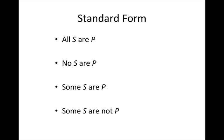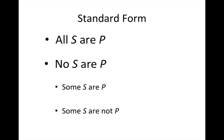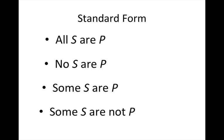First, let's review standard form for categorical propositions. Each of these is a claim type, so any sentence that is true or false can be resolved into one of these four forms: the universal affirmative, the universal negative, the particular affirmative, and the particular negative. Notice that there are a couple of features that each of these claim types share in common. They each have a subject and predicate class represented respectively by capital S and capital P, and they each have a copula represented by the conjugation of the verb 'to be' — the word 'are.'